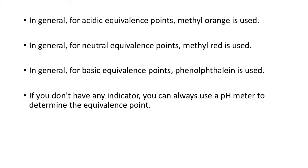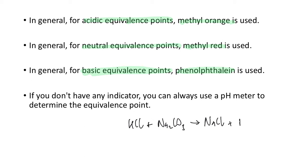For acidic equivalence points, we use methyl orange. For neutral equivalence points, methyl red. For basic equivalence points, phenolphthalein. For example, with hydrochloric acid and sodium carbonate, the reaction produces NaCl which is a neutral salt, but it also produces H₂O and CO₂, and CO₂ is acidic. So you have to take that into account — it's going to be an acidic end point.